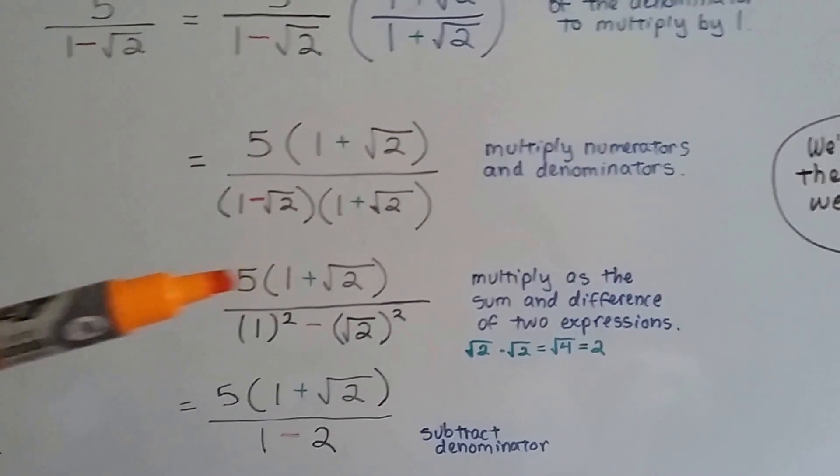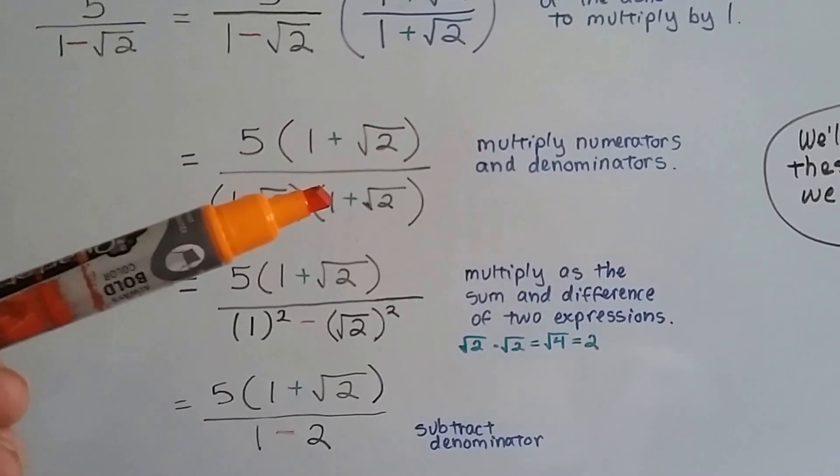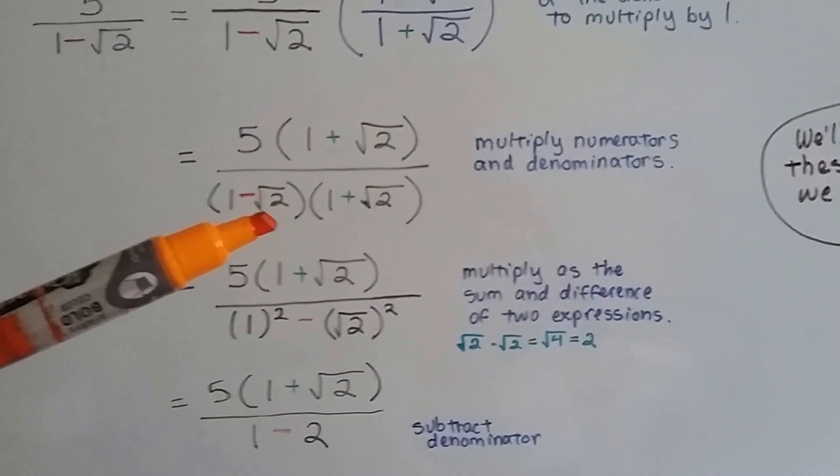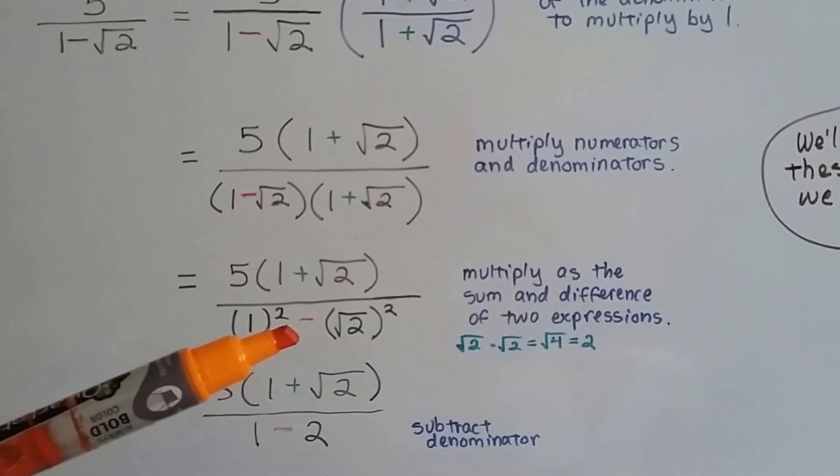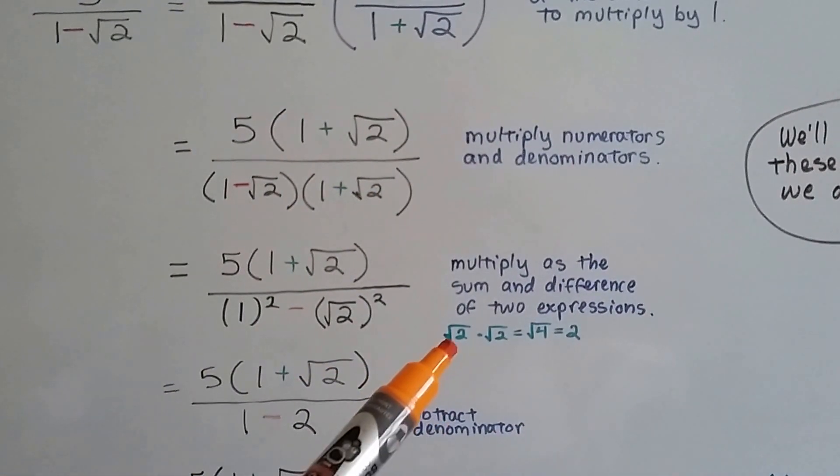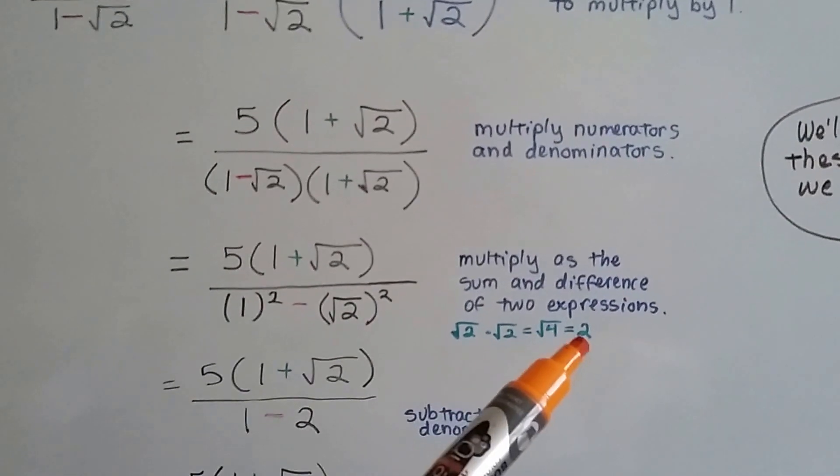We multiply as the sum and difference of two expressions. This numerator is staying the same, but the denominator ends up becoming a 1 times a 1. That's a 1 squared. And this square root of 2 ends up becoming minus square root of 2 squared. Square root of 2 times square root of 2. And the square root of 2 times the square root of 2 is the square root of 4.